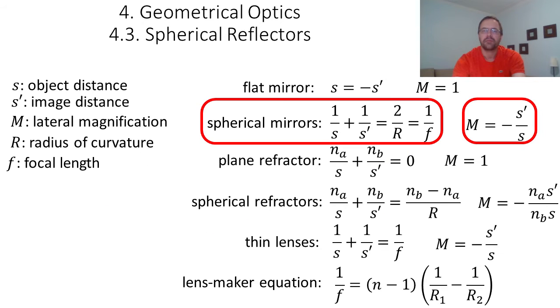Coming back to the formula, you can find the distance of the image s' or the distance of the object s, and you can also find the magnification. But the main difficulty will be finding the sign of s, s', and r.